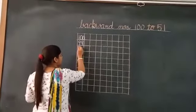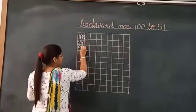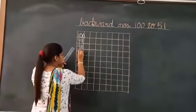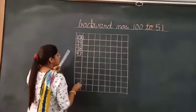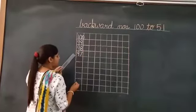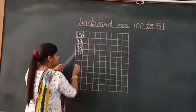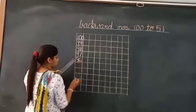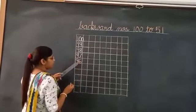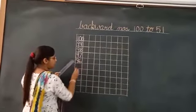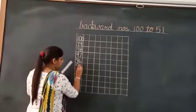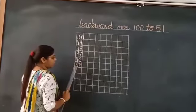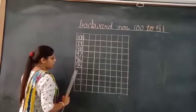That is 98. Which number will come before 98? 97. Which number will come before 97? That is 96. Which number will come before 96? 95. Which number will come before 95?